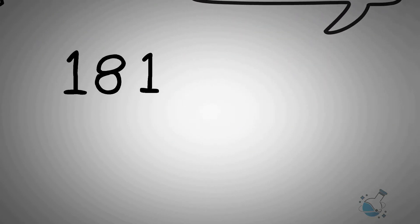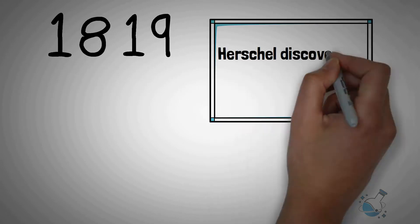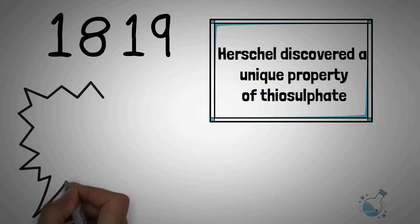A few years later, in 1819, Herschel discovered a unique property of thiosulfate, which we call the fixing property.